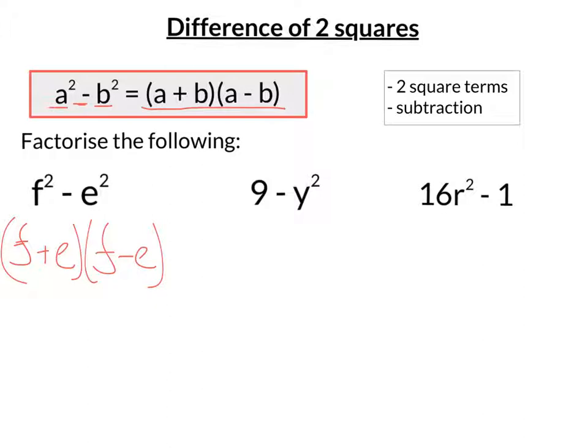Now, the next one, 9 minus y squared. Well, y squared is obviously a squared term, and so is 9, because 9 is 3 times 3.